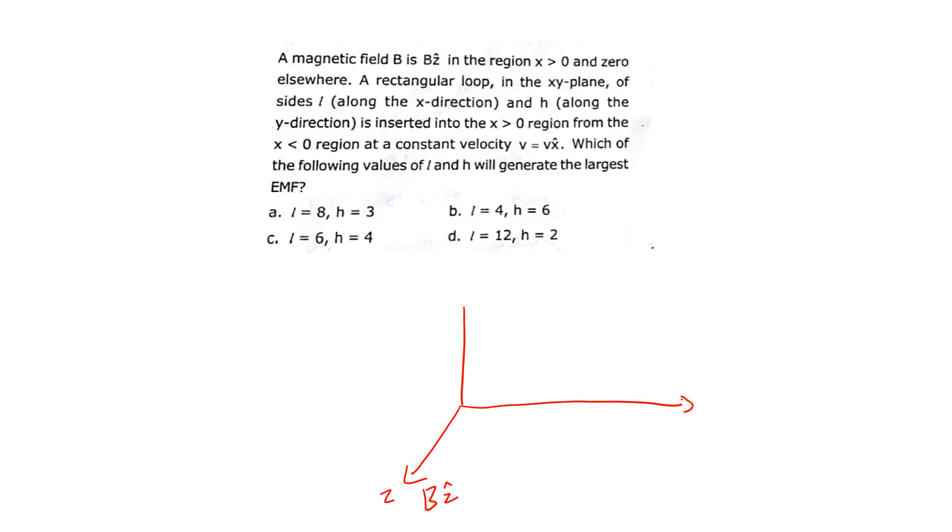There is a rectangular loop in the xy-plane. We take the x-axis to be the horizontal axis and y to be the vertical axis. The coil is moving along the positive x-direction.